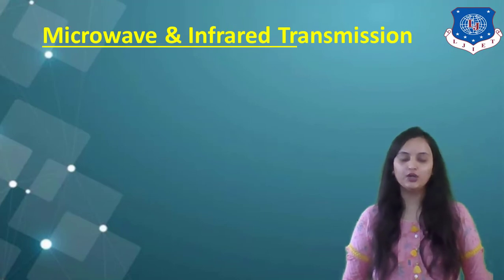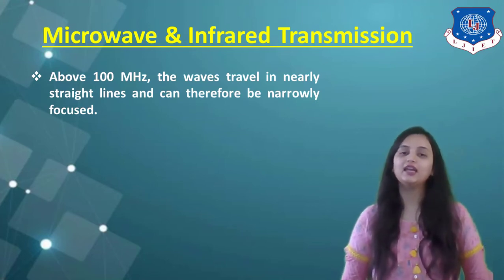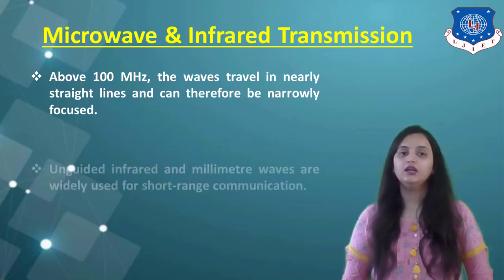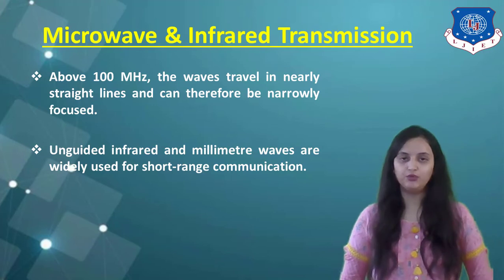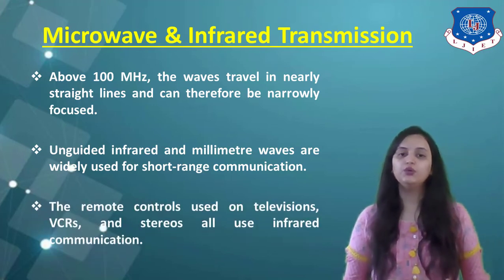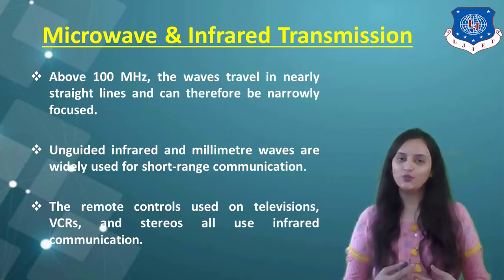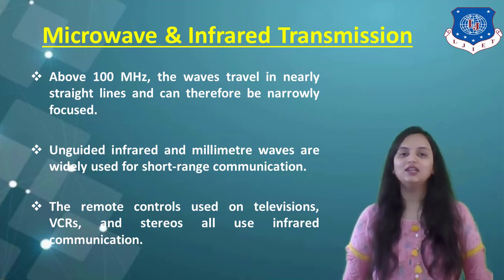Next is microwave and infrared transmission. Above 100 MHz, waves travel in nearly straight lines and can be narrowly focused — these are called microwaves. The unguided infrared and millimeter waves are widely used for short-range communication. Remote controls used on televisions, VCRs, and stereos all use infrared communication. Whenever you use a remote control for your TV or AC, that uses infrared communication.